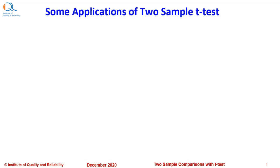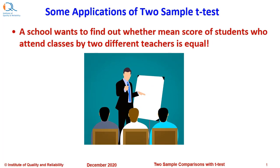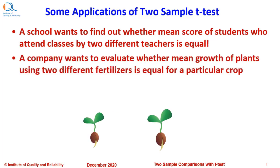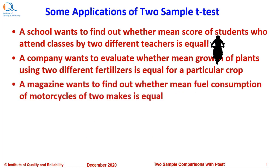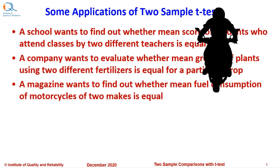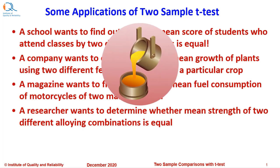Let us see some applications of two sample t-tests. A school wants to find out whether mean score of students who attend classes by two different teachers is equal. A company wants to evaluate whether mean growth of plants using two different fertilizers is equal for a particular crop. A magazine wants to find out whether mean fuel consumption of motorcycles of two makes is equal. A researcher wants to determine whether mean strength of two different alloying combinations is equal.